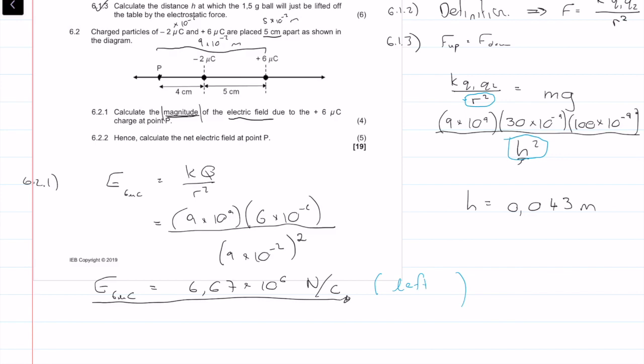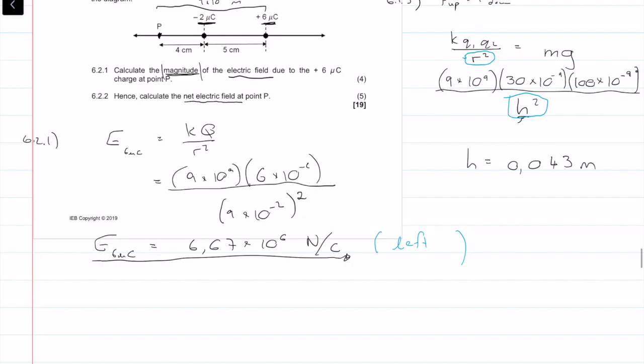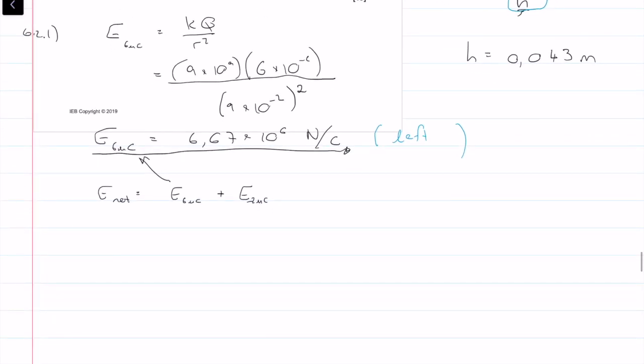Now it says, hence calculate the net electric field. Remember there's two charges here, the minus 2 and the 6 nanocoulombs. Basically, to calculate the net, we need to add. So Enet, the net electric field, is equal to the 6 nanocoulomb electric field plus the minus 2 nanocoulomb electric field. We already have that, so we need to calculate the electric field due to the minus 2 nanocoulomb.